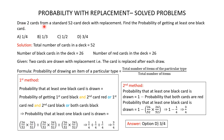With Replacement Problem 5: Draw 2 cards from a standard 52-card deck with replacement. Find the probability of getting at least 1 black card. Total cards = 52, black cards = 26, red cards = 26. Cards are replaced after each draw. This probability can be found using two methods.